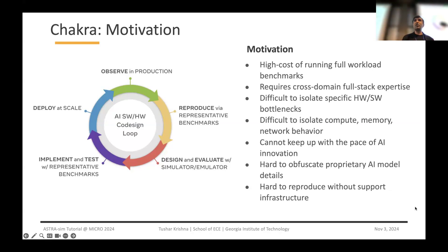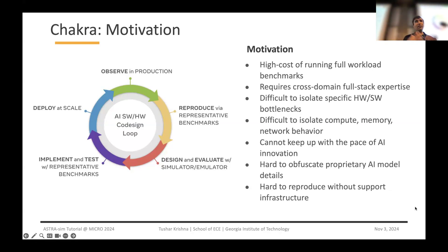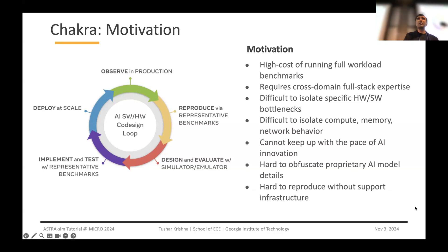It's also hard to keep up with the pace of AI innovation. We have benchmarks like MLperf, but a lot of stories go that models companies are using are already way ahead of what they've contributed to MLperf, because of the rate at which things are evolving. It's also hard to obfuscate proprietary AI model details — companies developing models are hesitant to share all model details with vendors building new networks, compute, or memory. It ends up being a very ad hoc mechanism with spreadsheets being shared around, creating a very fragmented and challenging ecosystem. It's also hard to reproduce data without support infrastructure today.